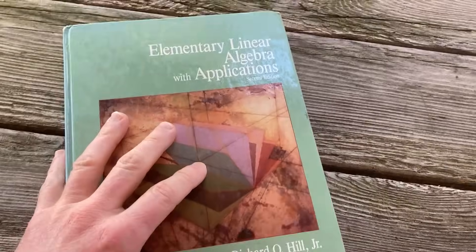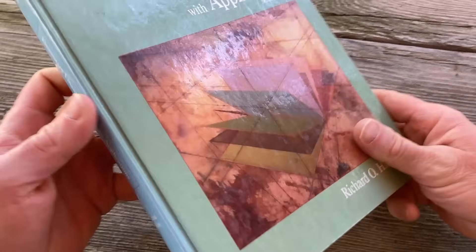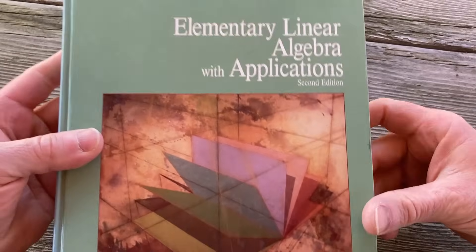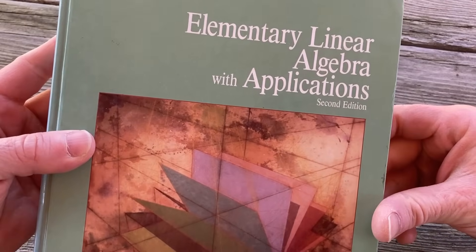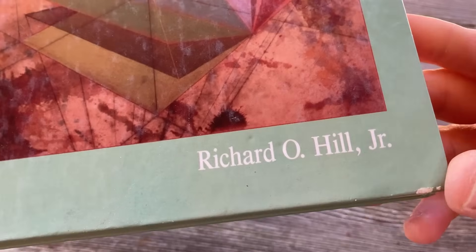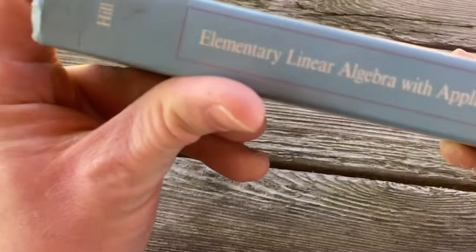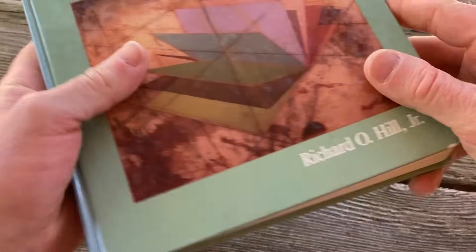I love the color of the cover and it just has this old school feel. It's called Elementary Linear Algebra with Applications. It is the second edition and it was written by Richard O'Hill Jr. Elementary Linear Algebra. It's my hardcover.